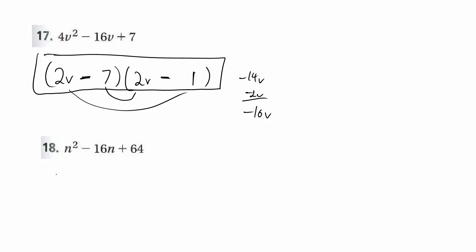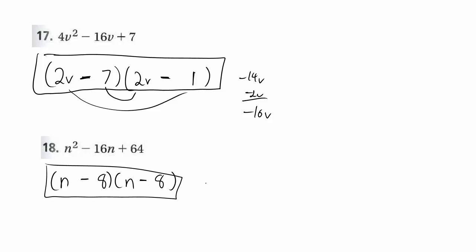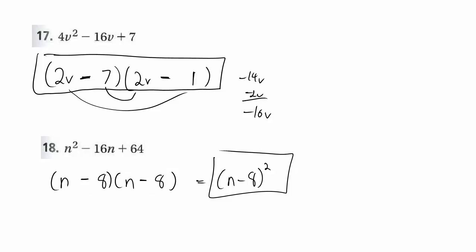For number 18, this is still pretty easy to factor. 8 times 8 is most people's favorite way to get 64, and 8 added to an 8 gives you 16. We know they're both negative. So this is clearly the way to factor this. The preferred way to write it is n minus 8 squared — that's more compact.